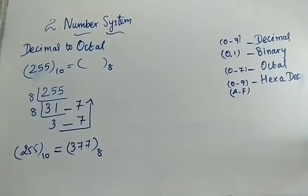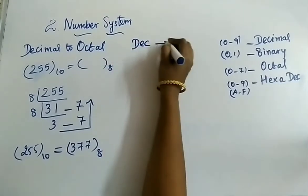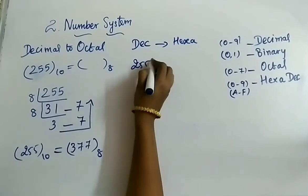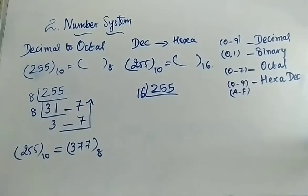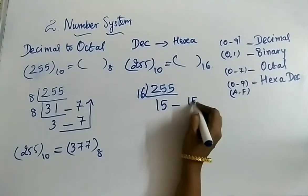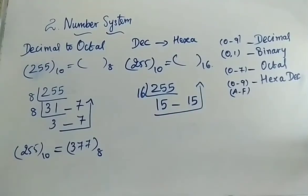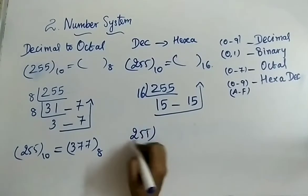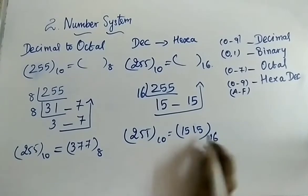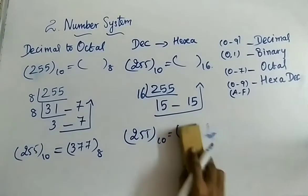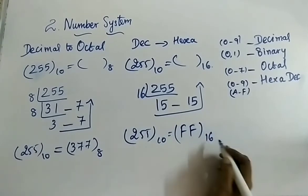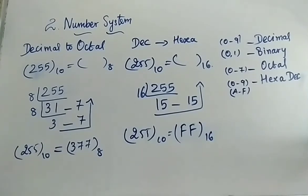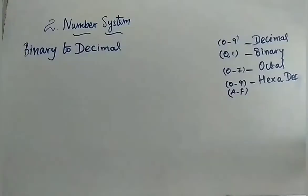Next model is decimal to hexadecimal. The same problem: 255 to the base 10. You have to divide repeatedly by 16. 255 divided by 16 gives 15 remainder 15. Writing from bottom to top, you get 15 and 15. You should not write 15 directly — for 15 you write F. So the answer is FF to the base 16.